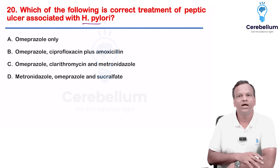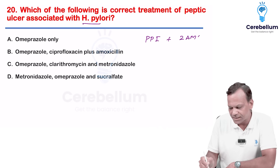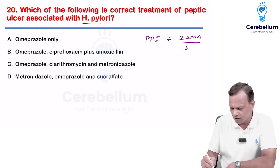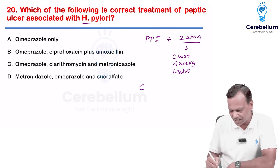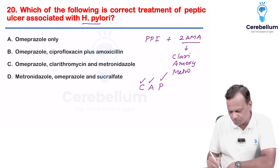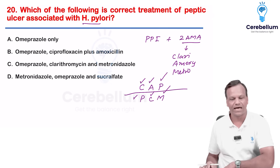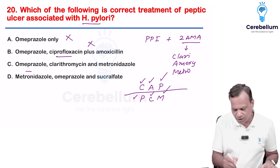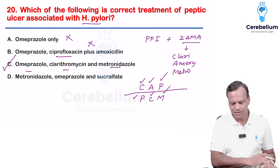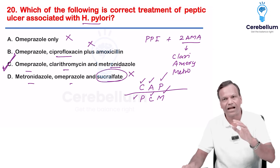Correct treatment of peptic ulcer with H. pylori: we use a proton pump inhibitor with two antimicrobial agents — any two from clarithromycin, amoxicillin, and metronidazole. Commonly used therapies are CAP (clarithromycin + amoxicillin + PPI) or PCM (PPI + clarithromycin + metronidazole). Omeprazole alone is insufficient; ciprofloxacin is not used. The answer is omeprazole + clarithromycin + metronidazole (PCM therapy).